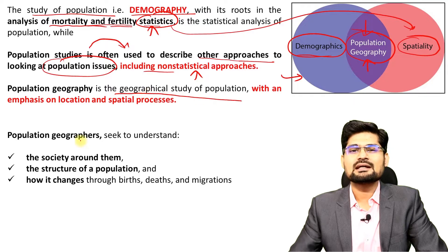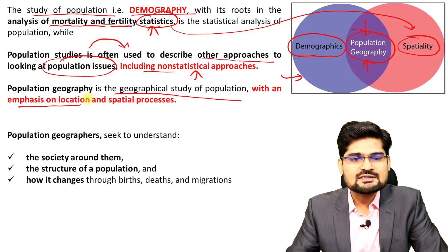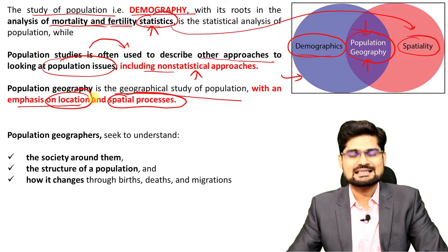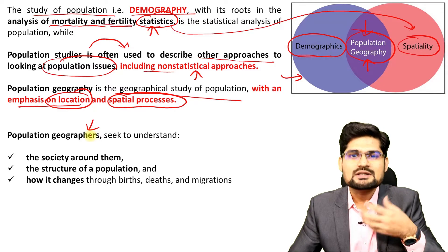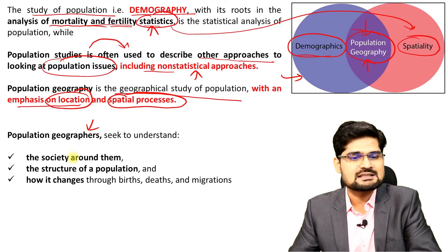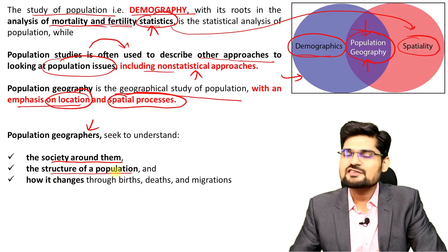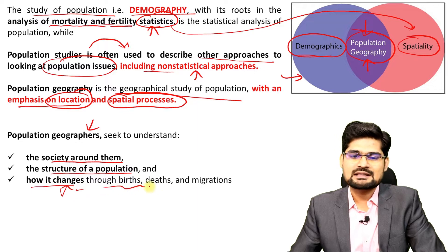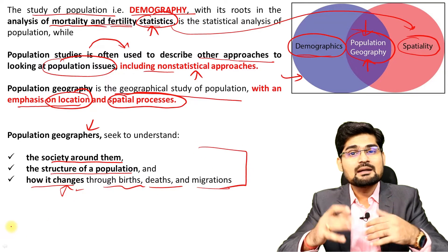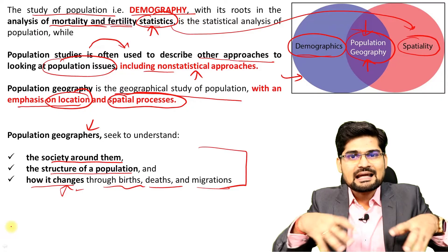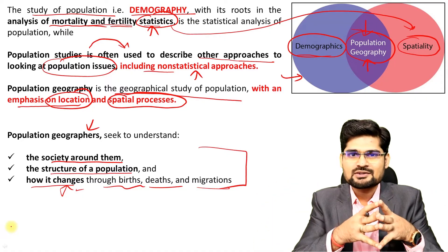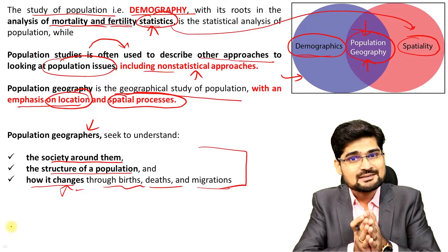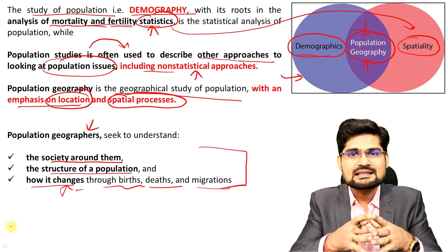Population geography in simple terms is the geographical study of population with an emphasis on locational attributes and spatial processes. Population geographers are concerned with the structure of population and how it changes dynamically through birth rates, death rates, migrations and several others — and what impact it has on space. Is population pocketed into a particular center? Is it widely distributed? Is it a linear pattern? What are the locational attributes added to it? These are the things we learn in population geography.